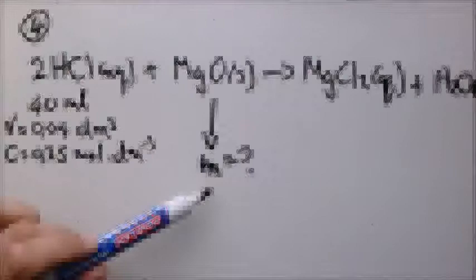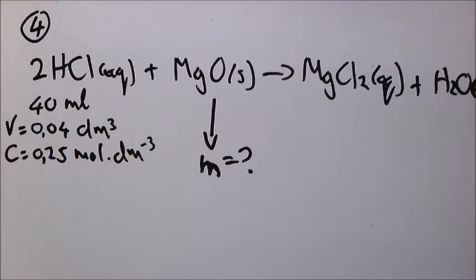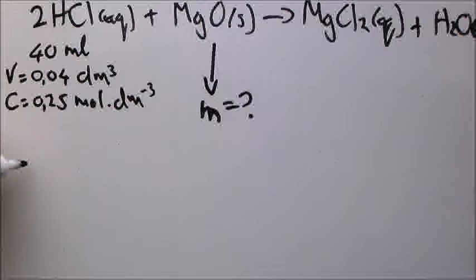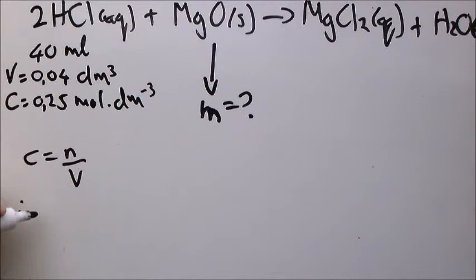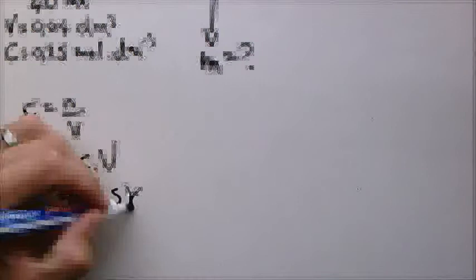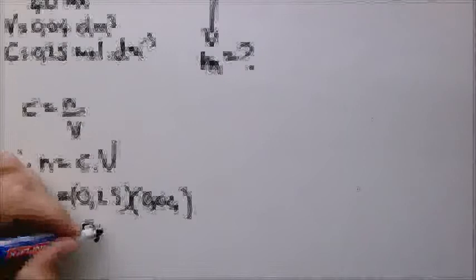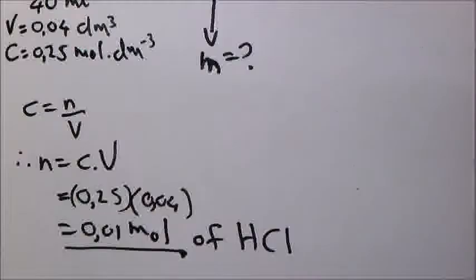It's almost like getting onto a train at a station and getting off at different platforms. So let's start with the concentration equation: C = n/V, therefore moles = concentration × volume. For the acid, concentration was 0.25 and volume was 0.04. Doing the calculation gives 0.01 moles of hydrochloric acid.